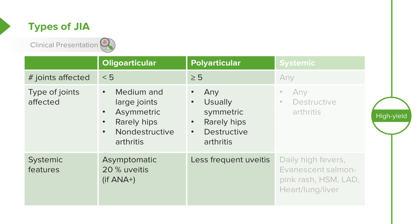Systemic JIA may have any joints involved or no joints at all. If joints are involved, it's often a destructive arthritis. These patients usually present with high daily fevers, an evanescent salmon pink rash, and may have hepatosplenomegaly, lymphadenopathy, or heart, lung, or liver involvement. These children have a systemic autoimmune process.